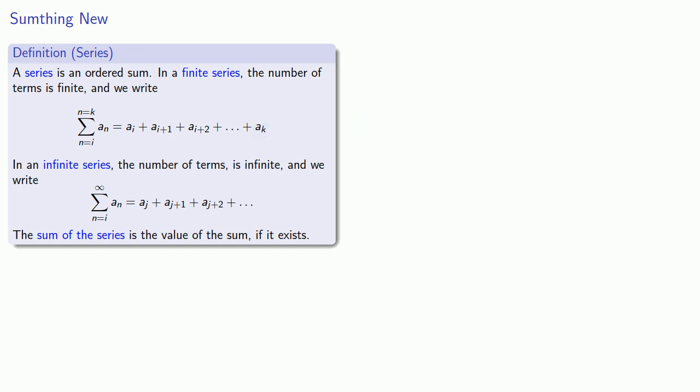The only difference between a finite series and an infinite series is that in an infinite series, the number of terms is infinite, and we write the upper limit as infinity. Now while we can write down the series as a sum, the actual sum of the series is the value of that sum, provided that it exists.